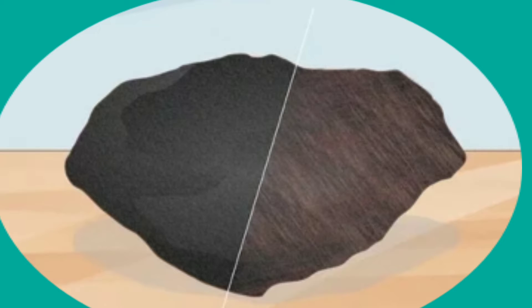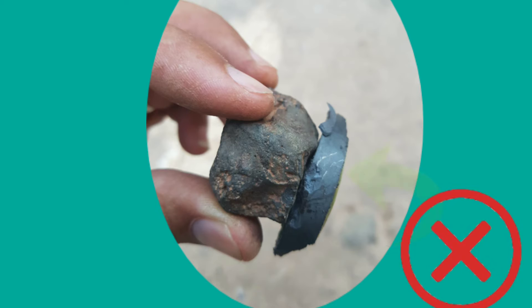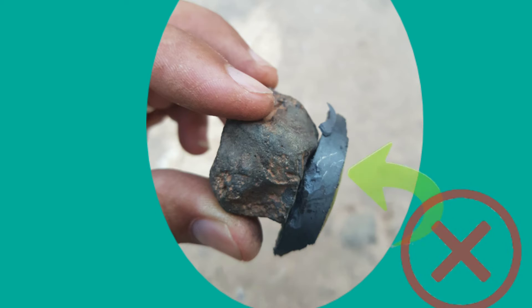Solid iron meteorites have a very bright solid chrome interior when cut or ground. Magnets are almost always attracted to meteorites. In fact, if your sample does not attract a magnet, it's about 99.9% certain that it is not a meteorite. Iron meteorites are very strongly attracted to powerful magnets; however, a common refrigerator magnet may be too weak to demonstrate a noticeable pull towards a meteorite.